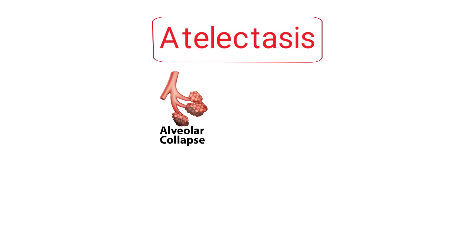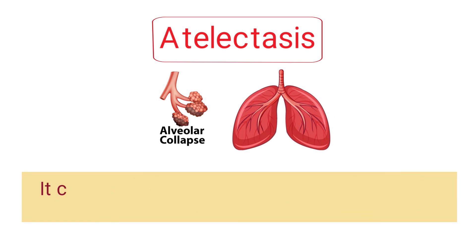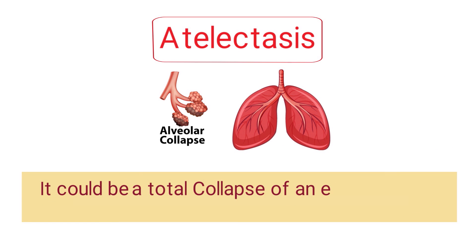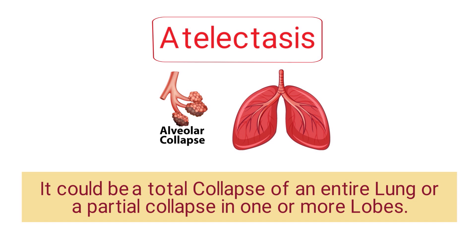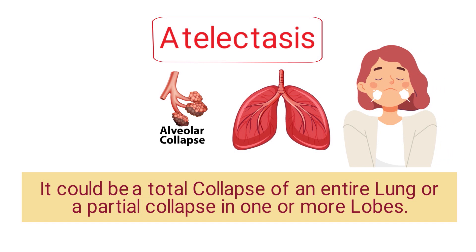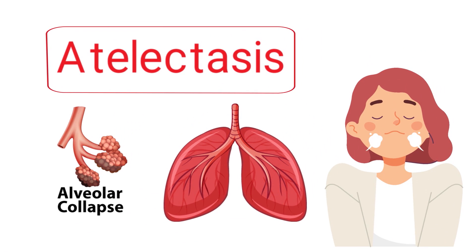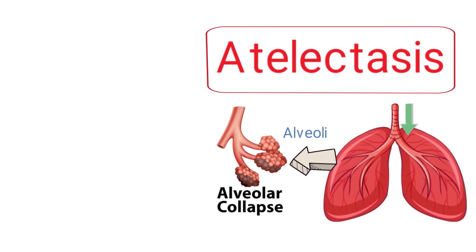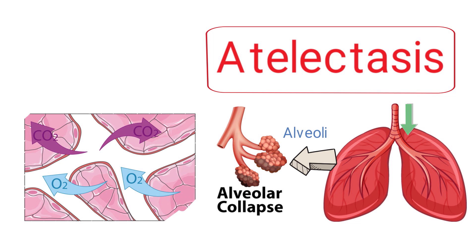First and foremost, we need to talk about atelectasis. Atelectasis is a term that refers to a collapse in the alveoli of the lungs. It could be a total collapse of an entire lung or a partial collapse of one or more lobes. As you take a breath in, air moves through the mouth and trachea down through the airways of the lungs until it reaches the tiny air sacs known as alveoli — this is where the gas exchange of oxygen and carbon dioxide takes place.